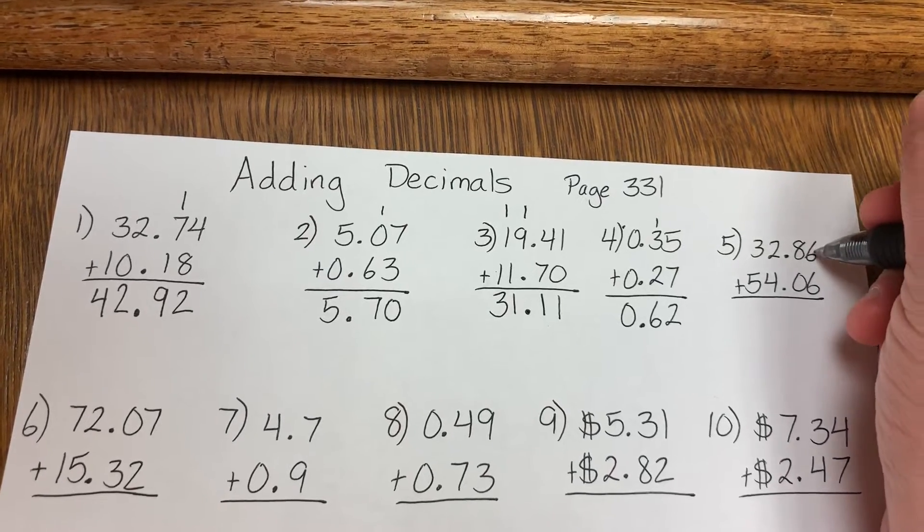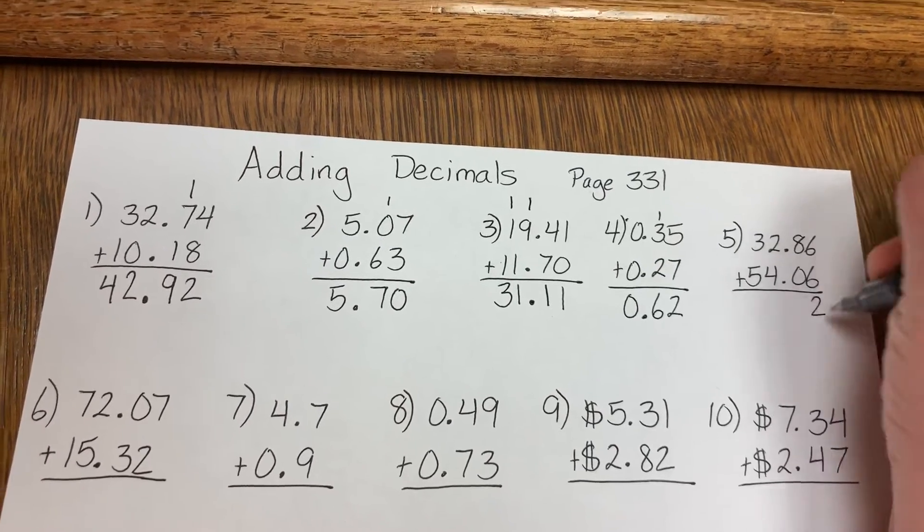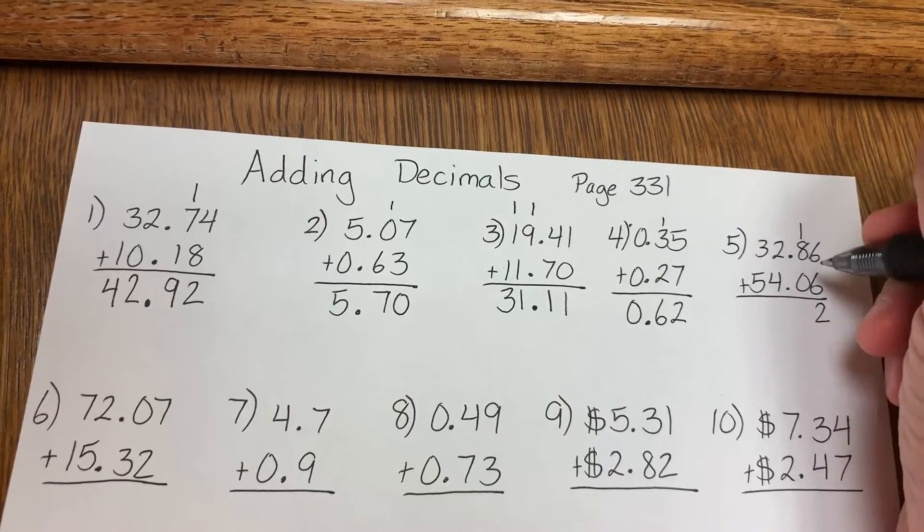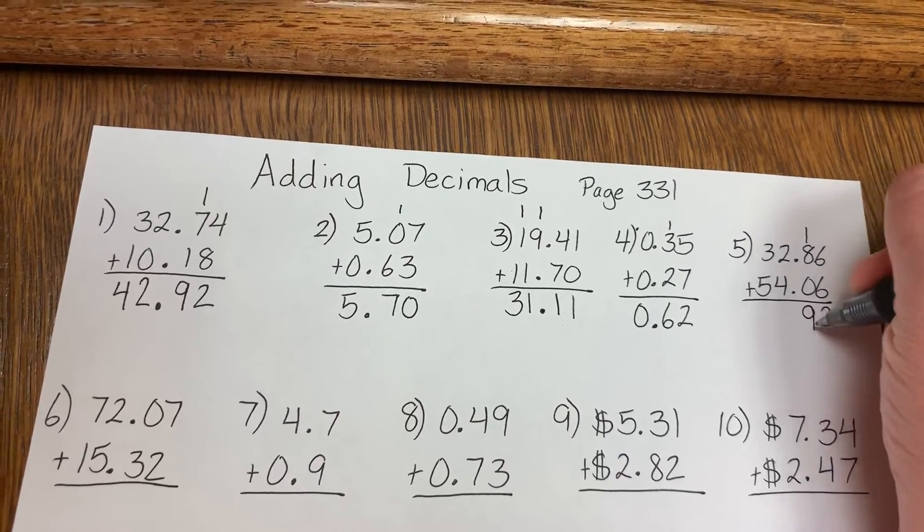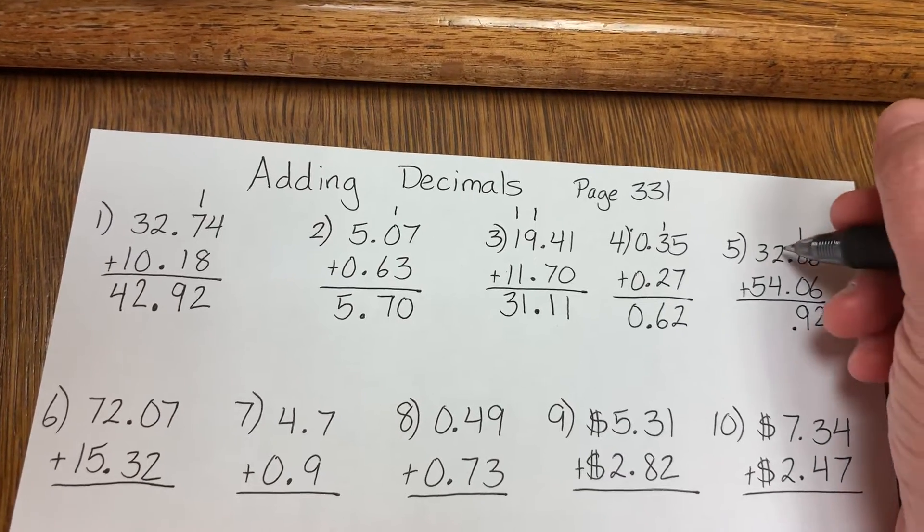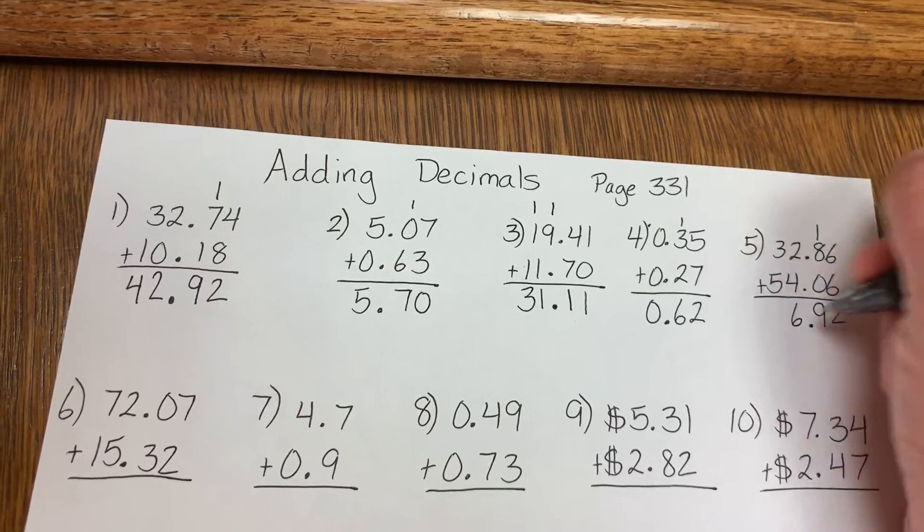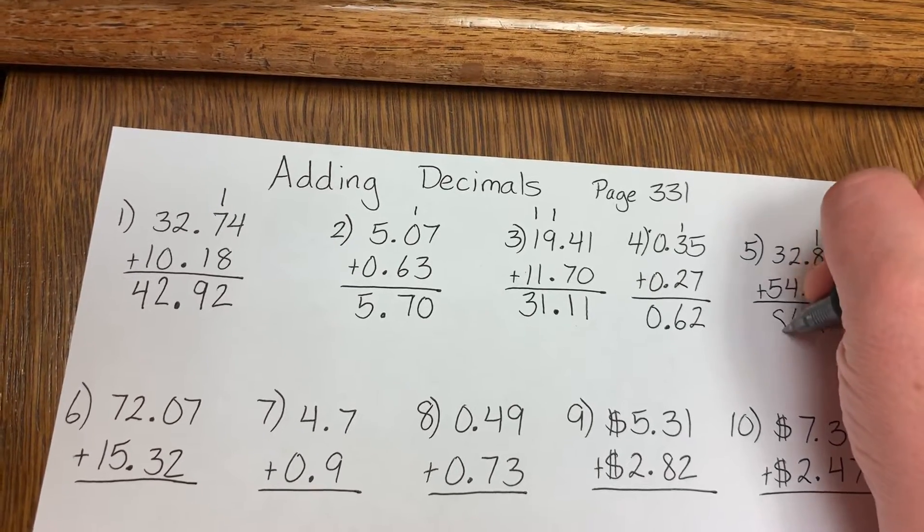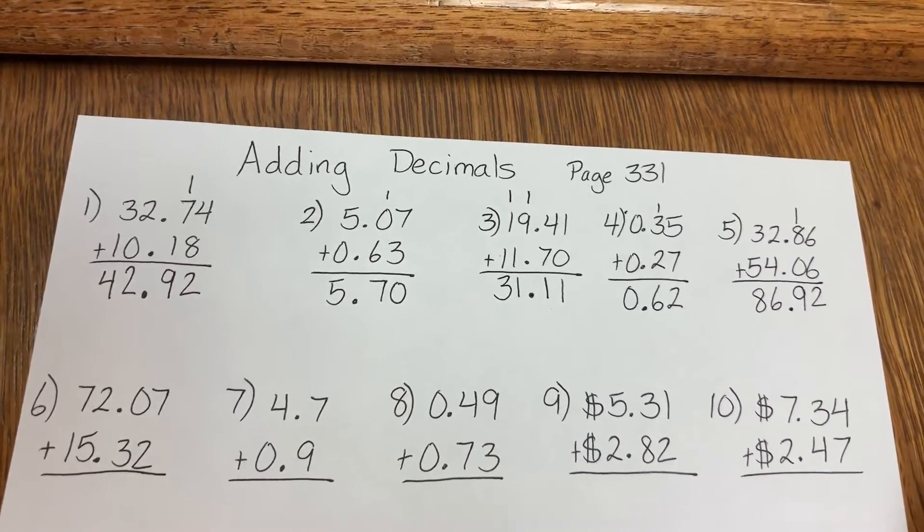Number 5: 6 plus 6 is 12. 2 down, carry the 1. 1 plus 8 is 9. Bring down your decimal point. 2 plus 4 is 6. 3 plus 5 is 8. So your answer is 86.92.